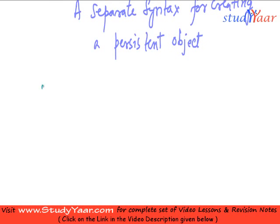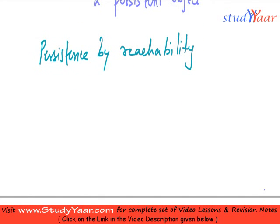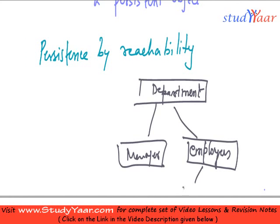The next approach is persistence by reachability. We have seen the concept of reachability — for example, there could be an object like department. This object in itself might have an object like manager, and it can have employees such as employee one, employee two and so on. In the concept of persistence by reachability, if you say department is persistent, then every other reachable object within it is also persistent.